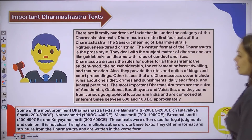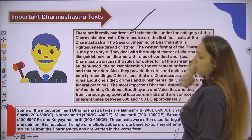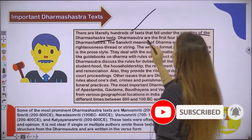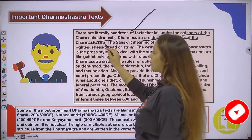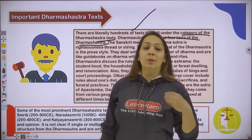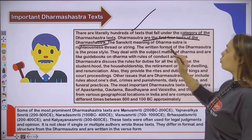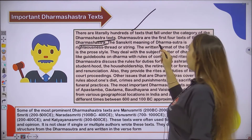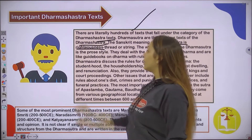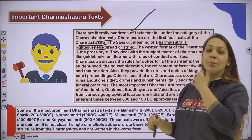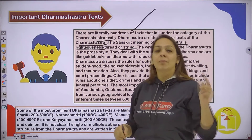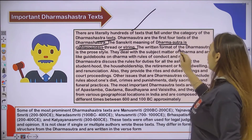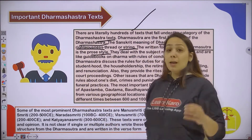Next, we talk about important Dharm Shastra texts. There are literally hundreds of texts — they are very voluminous. Dharm Sutra are the first four texts that fall under the category of Dharm Shastra, meaning Dharm Shastra is the broader term. The Sanskrit meaning of Dharm Sutra relates to righteousness — that which is morally correct and justifiable. The written format of Dharm Sutra is prose style, meaning simple lines without rhyming.